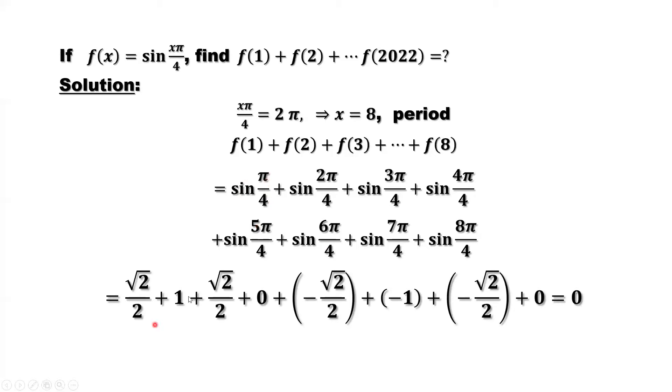Sine pi over 4, that's square root of 2 over 2. Sine of 2 pi over 4, which is the sine of half pi, which is 1. Sine of 3 pi over 4, it's also equal to square root of 2 over 2. Sine of 4 pi over 4, that's sine of pi, that's 0. Sine of 5 pi over 4, it is in the third quadrant. So that's a negative square root of 2 over 2. Sine of 6 pi over 4, which is sine of 3 pi over 2. Sine of 7 pi over 4, this is in the fourth quadrant, that's a negative square root of 2 over 2. Sine of 8 pi over 4, which is sine of 2 pi, that's 0.